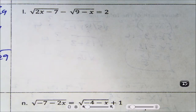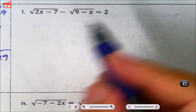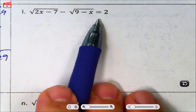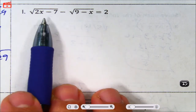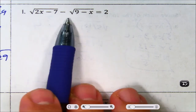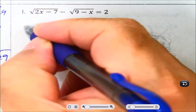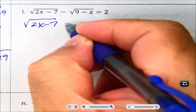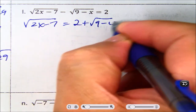This is part two of solving radical equations. Here there are two radicals and a number. It's not a good idea to leave both radicals together, so we're going to move one to the other side. We're going to make it square root of 2x minus 7 equals 2 plus the square root of 9 minus x.